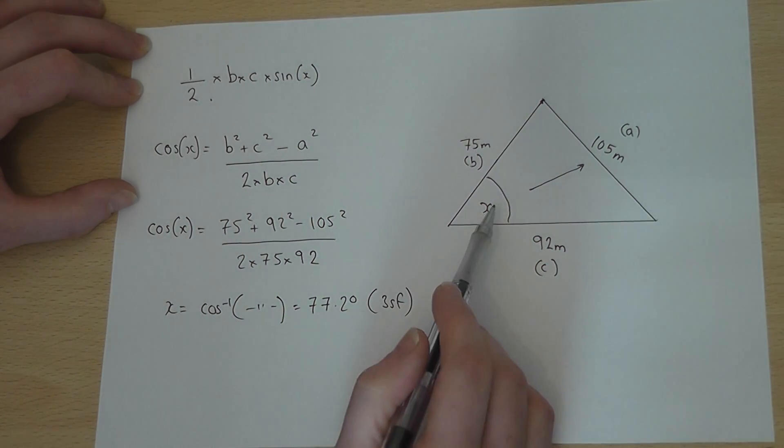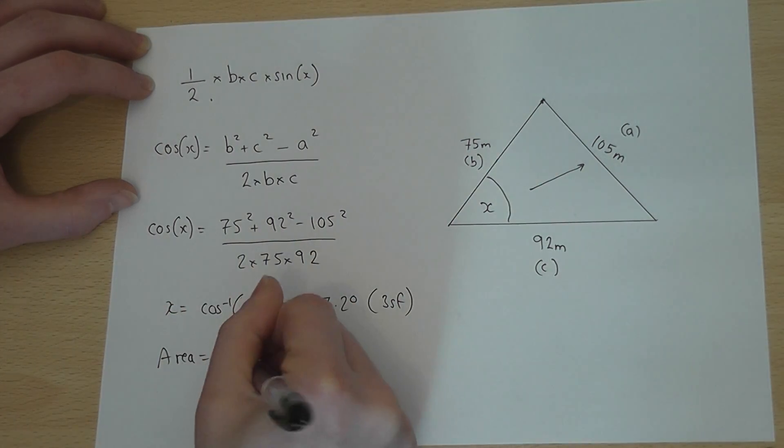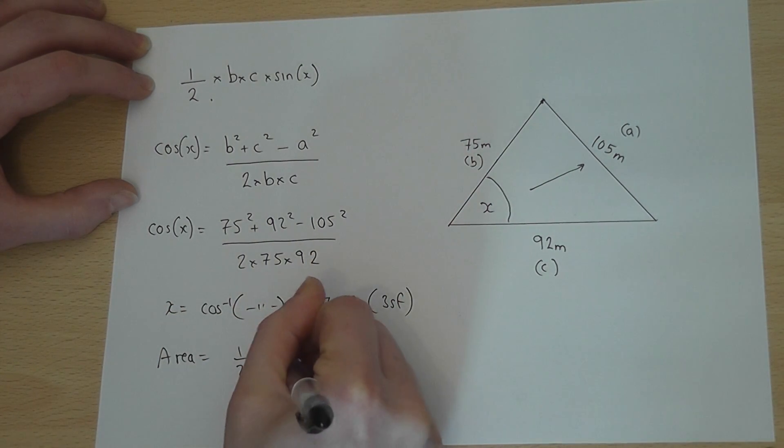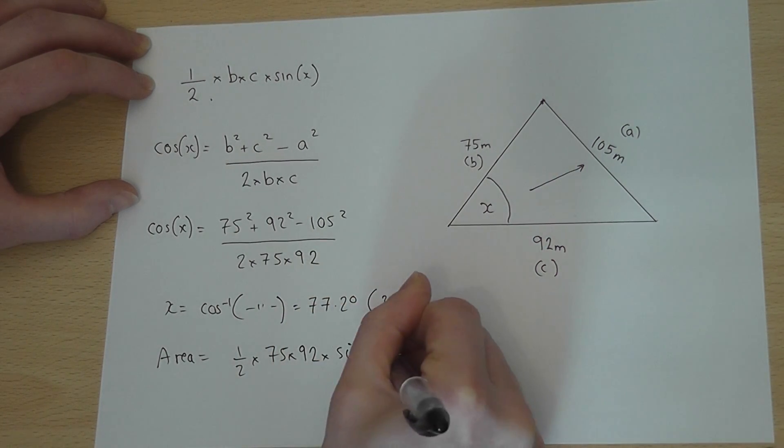So I now know X, so to find the area, I will just do a half times B times C times sine of the angle.